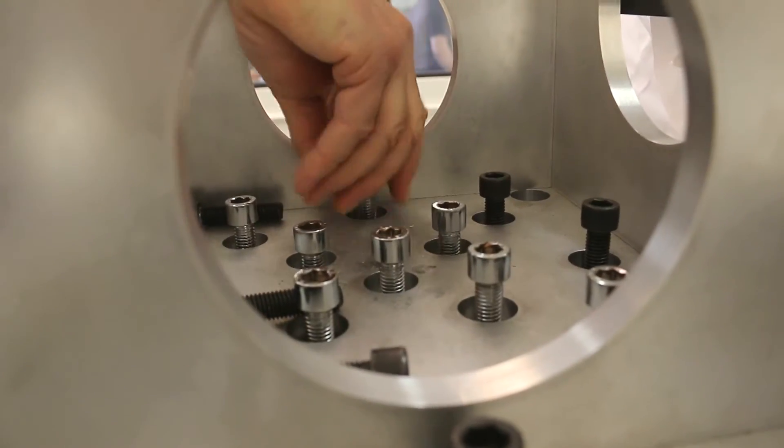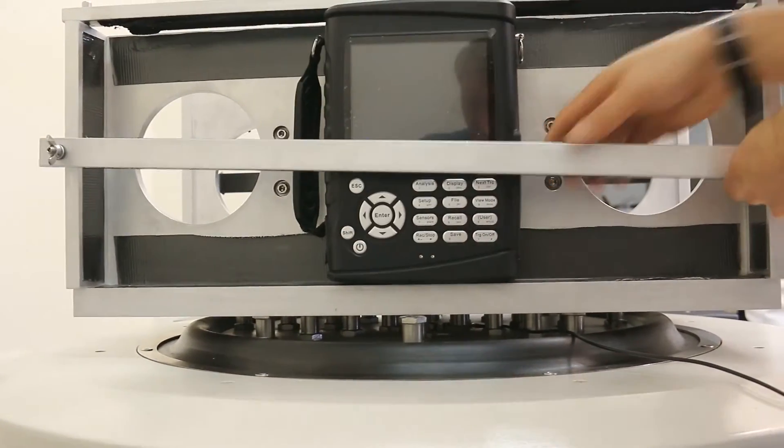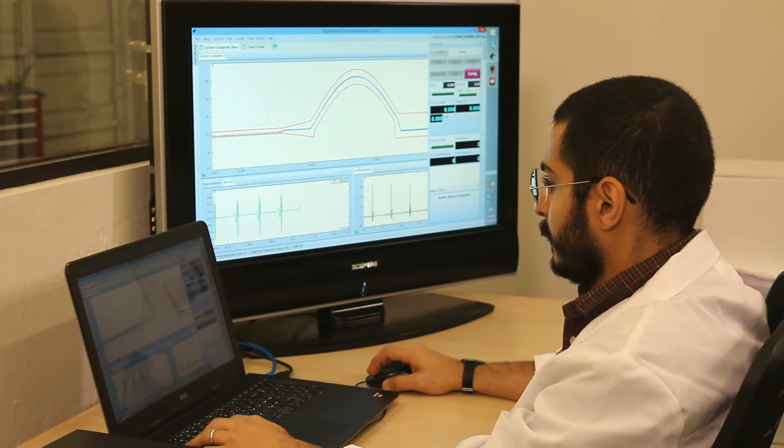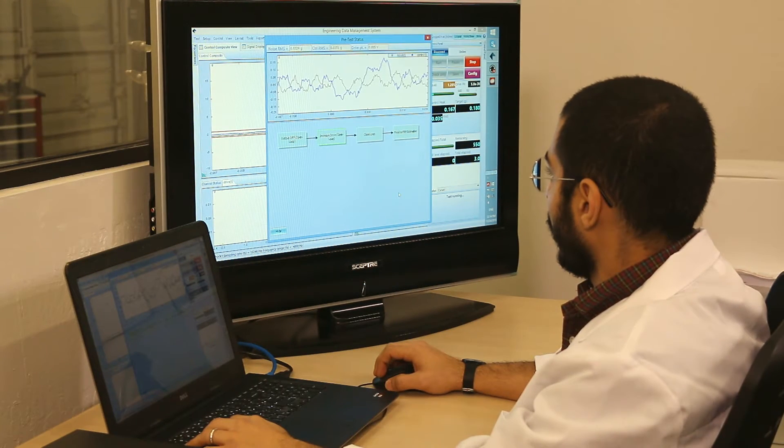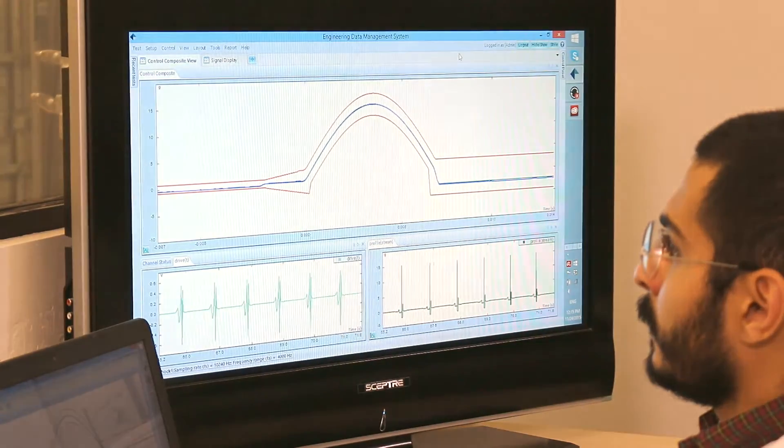Shock tests output a series of pulses to excite the structure under test. Shock tests are controlled using a profile defined in the time domain. Pulse time duration and peak acceleration are generally the two defining characteristics of a shock pulse.